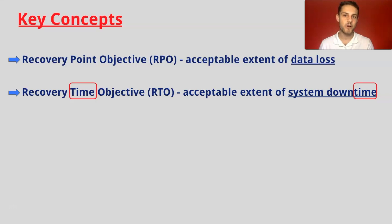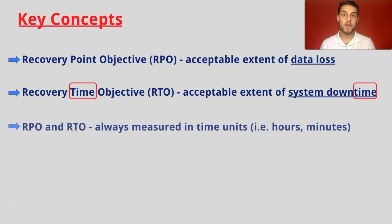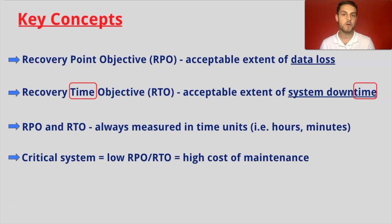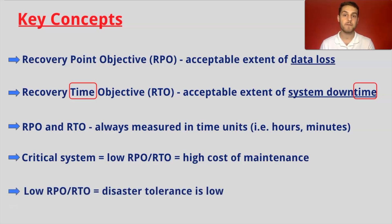Many people may confuse RPO and RTO, but this tip helps distinguish the two. RPO and RTO are always measured in time units such as hours, minutes, or days. Also, critical systems normally have low RPO and RTO, which increases the cost of maintenance. If you have low RTO and RPO, it is normally more demanding of certain personnel and equipment. Having a low RPO or RTO normally means that the disaster tolerance is low.